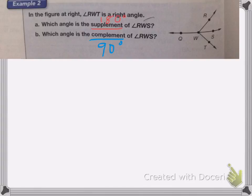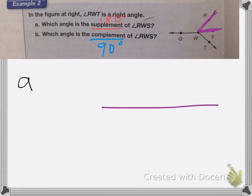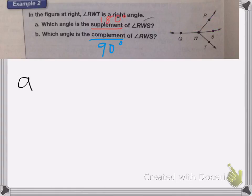Part A is asking which angle is a supplement to RWS. We're looking at angle RWS, and I need to figure out which angle I add to it to get 180 degrees. 180 degrees is a straight line, just a flat straight line. The angle I need to add to get 180 degrees is going to be RWQ, because when I add those two angles together, I end up with that flat line — 180 degrees.